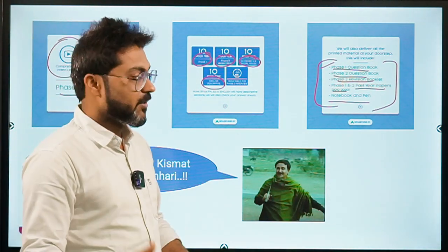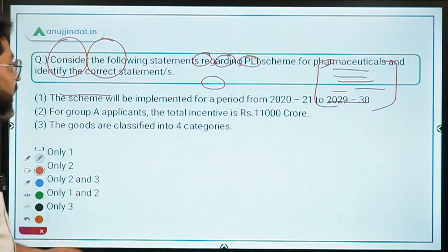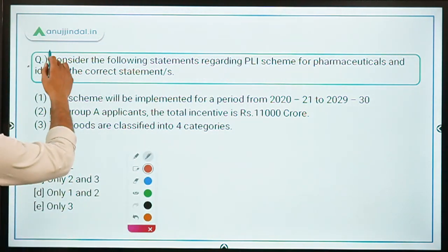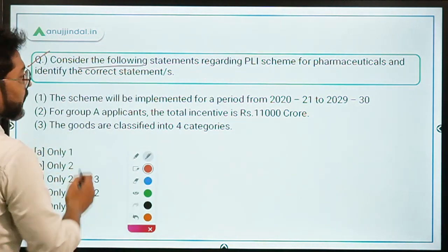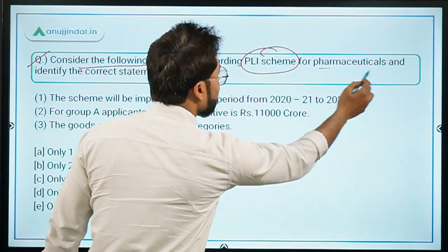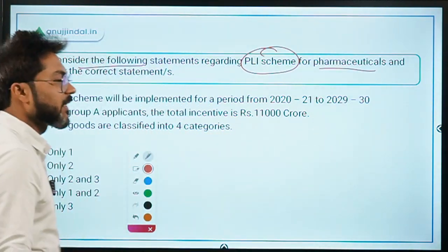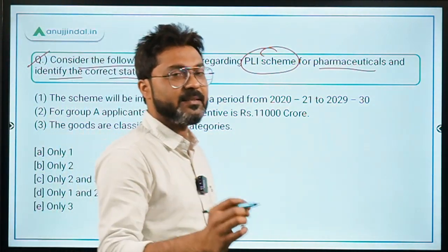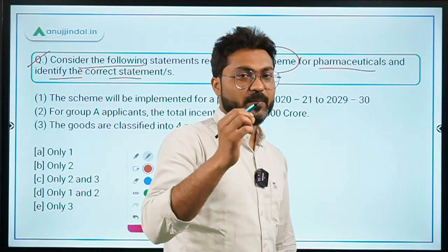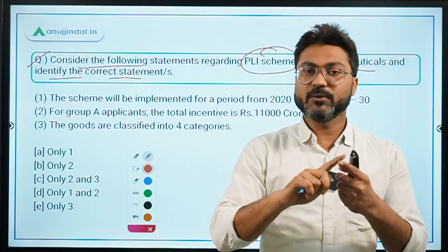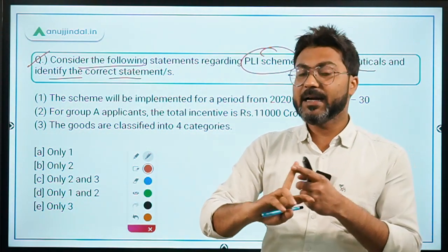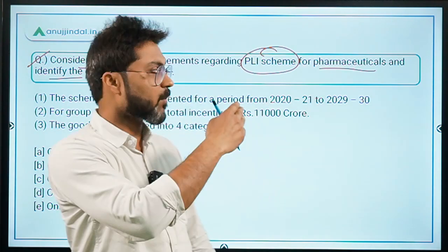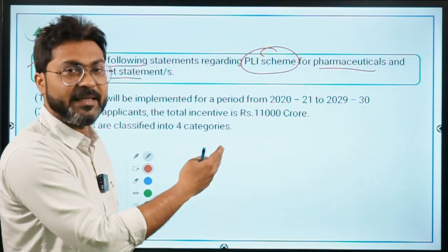Let's begin with the first question about the PLI scheme for pharmaceuticals — consider the following statements and identify the correct one. The PLI scheme has recently been approved for two sectors: pharmaceuticals and IT hardware, by the Union Cabinet. Question 1 is about pharmaceuticals and question 2 is about IT hardware.